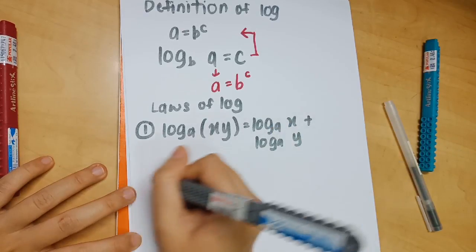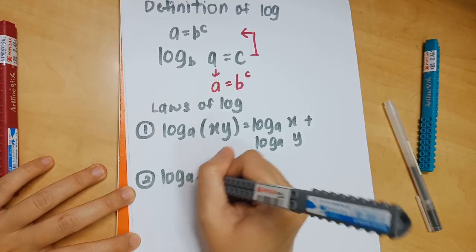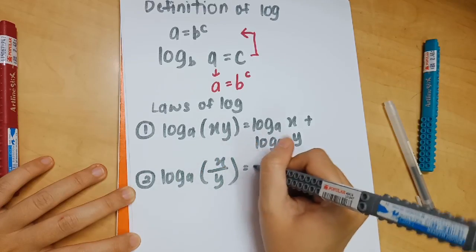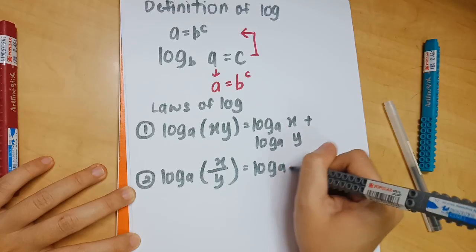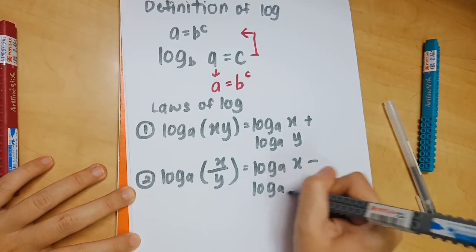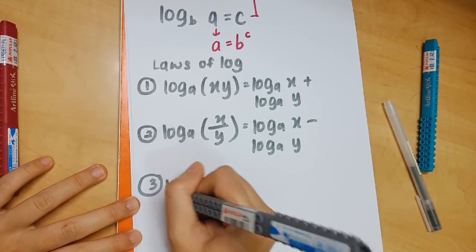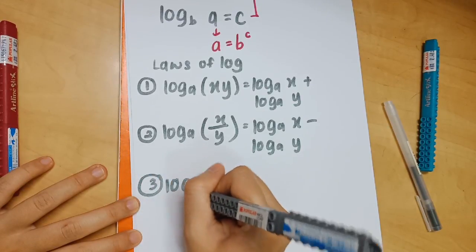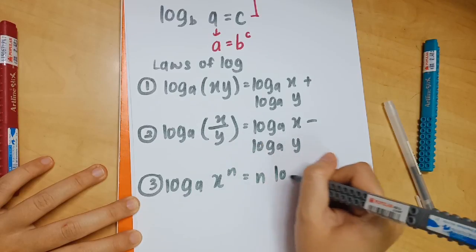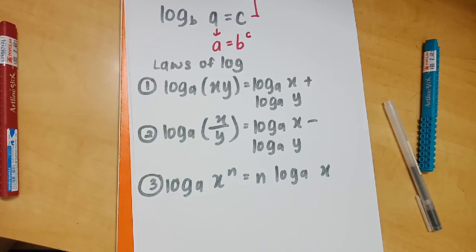Now we'll move on to the laws of logarithms. There are three laws. Law 1: log_a(xy) = log_a(x) + log_a(y). Law 2: log_a(x/y) = log_a(x) − log_a(y). Law 3: log_a(x^n) = n·log_a(x) — you bring the n in front.